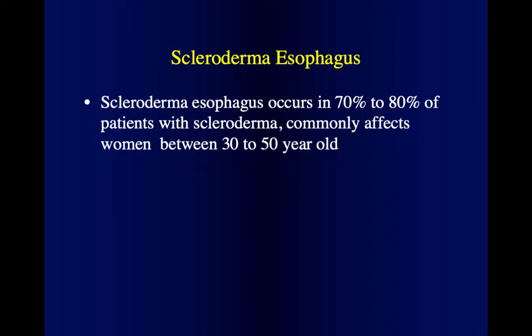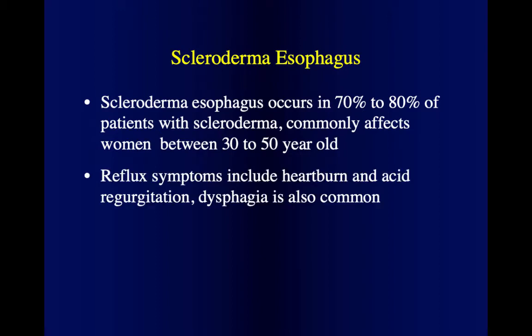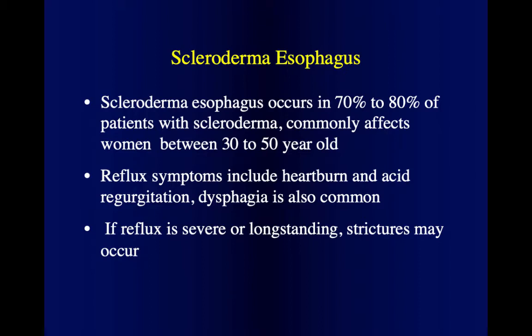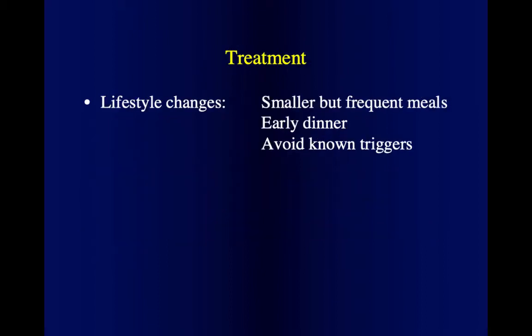Esophageal involvement is the most common gastrointestinal manifestation of scleroderma, affecting 70 to 80 percent of patients — usually women between age 30 to 50. Main symptoms are heartburn, acid regurgitation, and dysphagia because the esophagus cannot move food down properly. If reflux symptoms are long-standing, there is additional inflammation which can result in strictures — local narrowing in the esophagus.